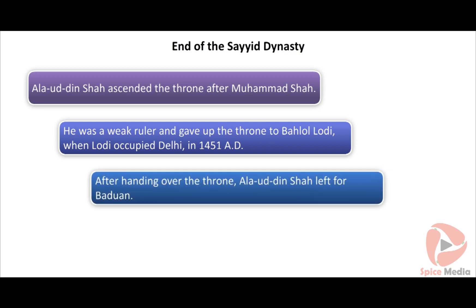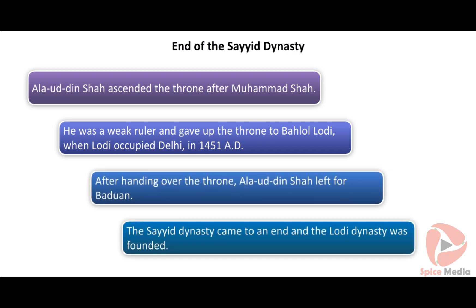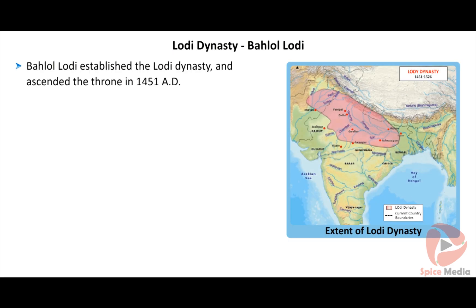Muhammad Shah ruled the Delhi Sultanate for 11 years from 1434 to 1445 AD. During his reign, Malwa was brought under the control of the Sultanate. Balol Lodi, who was the governor of Lahore, assisted Muhammad in capturing Malwa. Lodi was given the title Khan-e-Kanan for this.